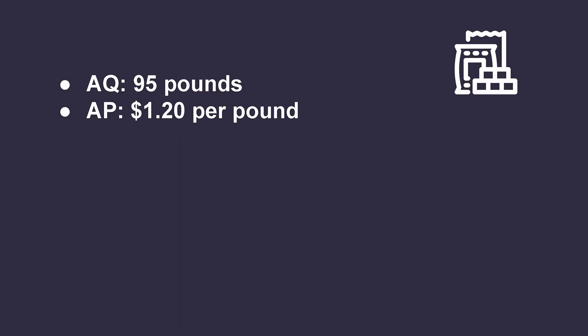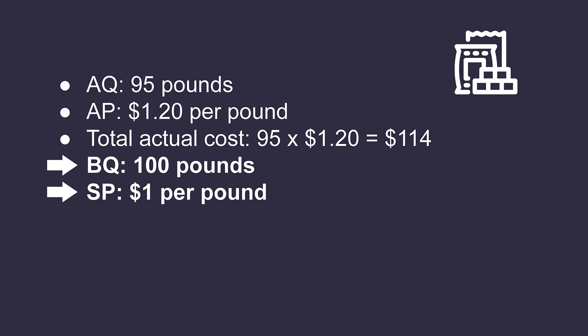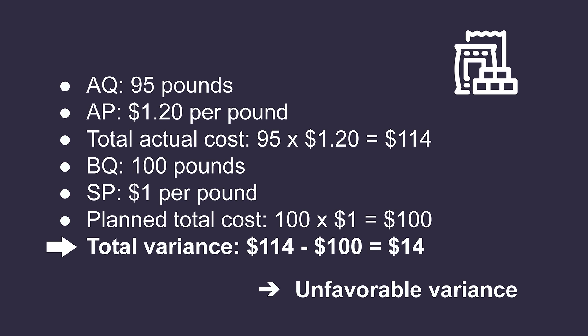Time for a quick exercise. Let's say a company actually used 95 pounds of material in production at a cost of $1.20 per pound. Their total actual cost would be $114 — that's 95 pounds times $1.20 per pound. If they had budgeted to use 100 pounds of materials at a standard price of $1.00 per pound, their planned total cost would be $100, taking 100 pounds times $1.00 per pound. This means their total variance would be the actual cost of $114 minus their planned cost of $100, which equals a $14 unfavorable variance, since they spent $14 more than they planned on materials. In order for the company to understand what went wrong, it's important to break this variance down further to determine whether it was the responsibility of the production department or the purchasing department. To do this, we would break down the $14 variance further into both price and usage variances.